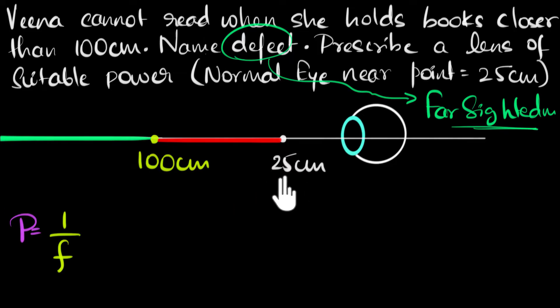Think of it this way. For a normal eye, this is the near point, right? So let me just write. This is the near point for a normal eye. Because beyond this, closer than this, a normal eye can't see things clearly. But for Veena, this is the near point. Because for her, closer than 100 centimeters she can't see. So this is the near point for Veena. I'm gonna put a star over here saying that's the near point for Veena.